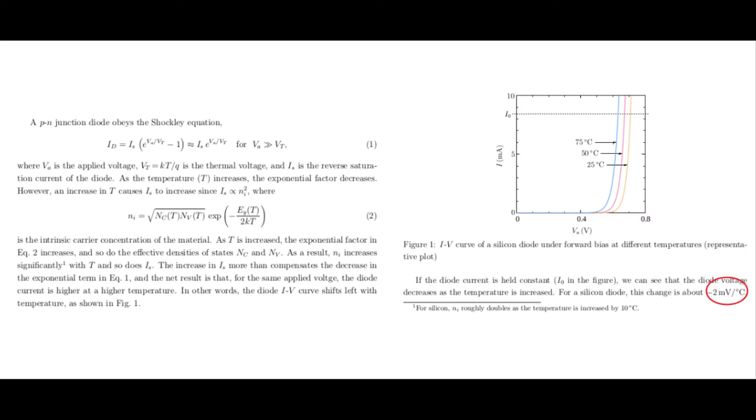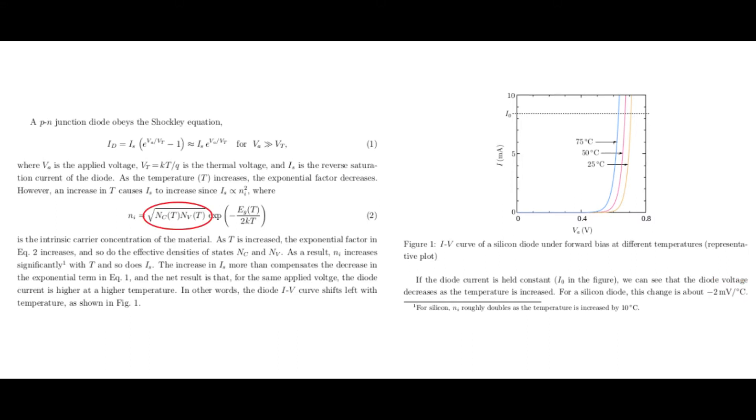So it's not clear to me exactly how that works out, given that I don't know the nature entirely of the effective density of states, the Nc and Nv you see there, which are also dependent on temperature. So that's for a future video discussing, I guess, diode physics.